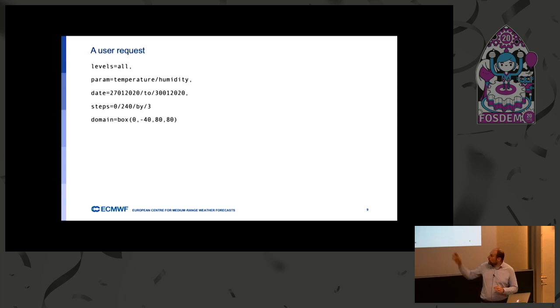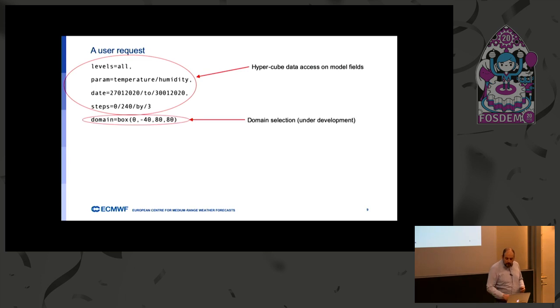Okay. We can easily split those requests in two parts. One is related to the hypercube data access. In the sense that we consider our data as filling a hypercube. With the several dimensions that are the data, the level, the variables, and so on. And we have to index those data according to that. And then, a geometric query. After now, a box. But probably something more interesting will be arriving pretty soon.